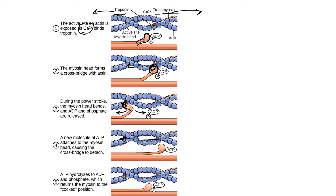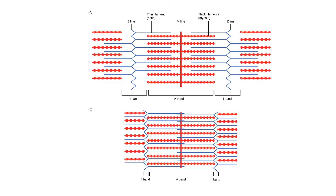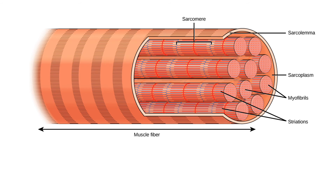Zooming back out, what we were looking at is what's going on between the myosin and the actin. The big picture concept you need to understand is called the sliding filament model. The actin and myosin are filaments, and what this means is exactly what's happening: the actin filaments are sliding toward the center so they're more compact — they have contracted and that shortens the sarcomere. If all sarcomeres are shortening, then we have a much shorter muscle.